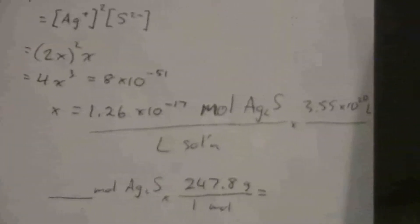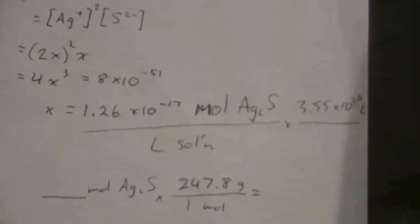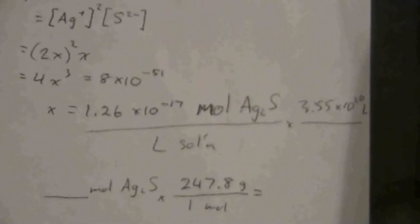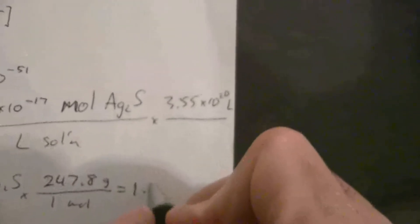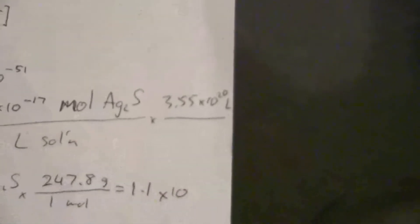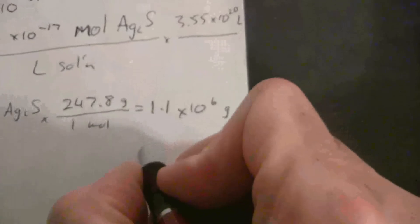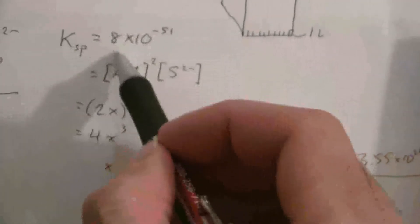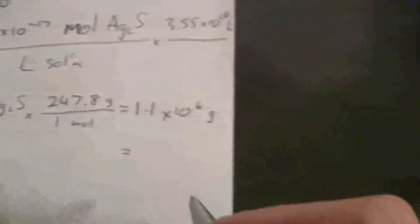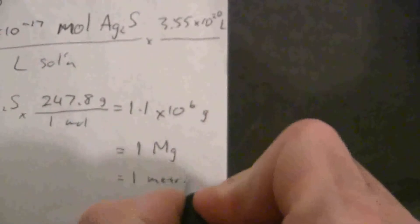I'm just continuing this in one sequence. What we end up with here: we have 1.26 times 10 to the negative 17th times 3.55 times 10 to the 20th times 247.8. And I end up with 1.1 times 10 to the 6th grams. And really since I'm at the end, I should reduce this down to one significant figure. So that would be 1 times 10 to the 6th grams, or 1 megagram, which is equal to 1 metric ton.